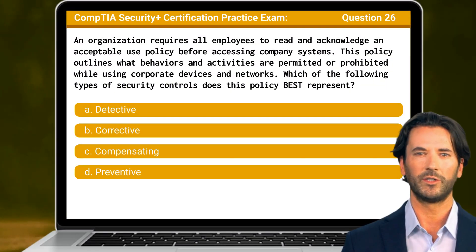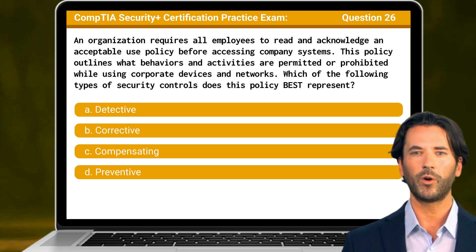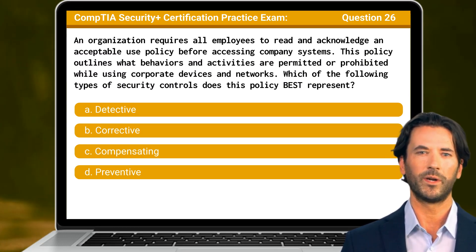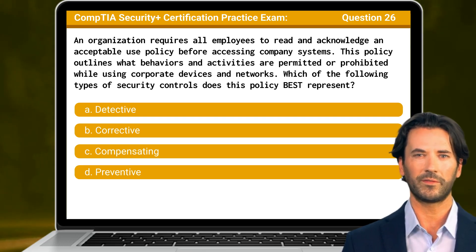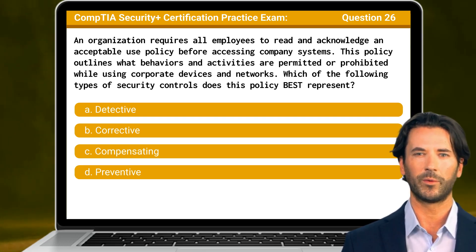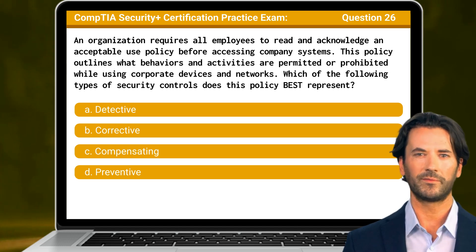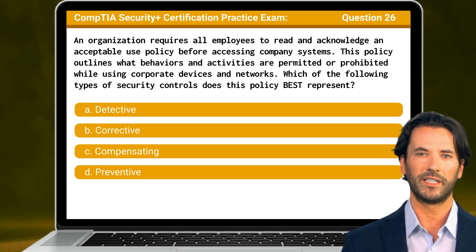Question 26. An organization requires all employees to read and acknowledge an acceptable use policy before accessing company systems. This policy outlines what behaviors and activities are permitted or prohibited while using corporate devices and networks. Which of the following types of security controls does this policy best represent?